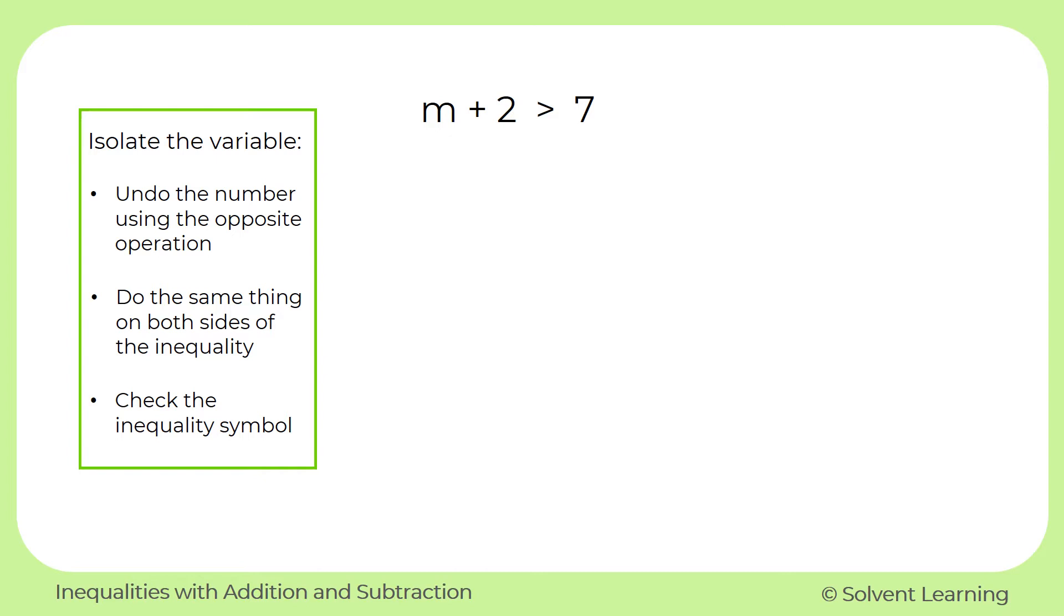So first, I'm going to draw a line down through the inequality symbol so that I can clearly see the left side from the right side. And now I want to undo the 2 so that I can get the m by itself on that left side. The opposite of adding 2 is to subtract 2. And I'll need to do the same thing on both sides.